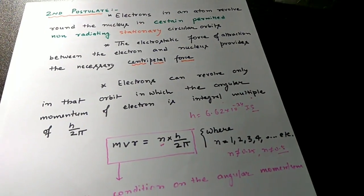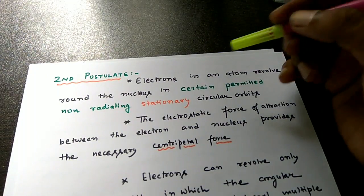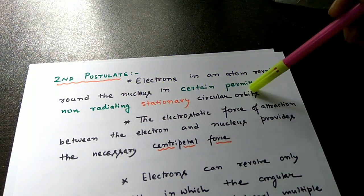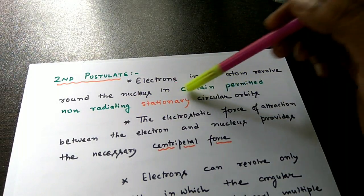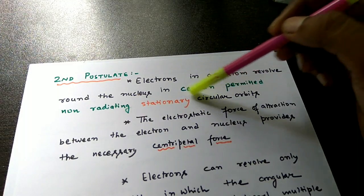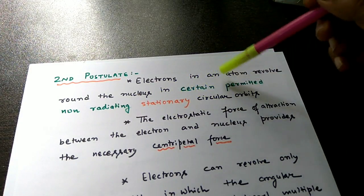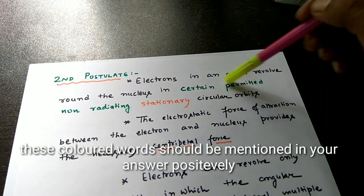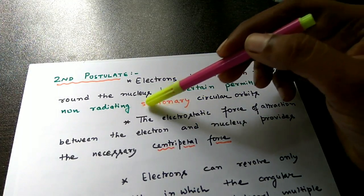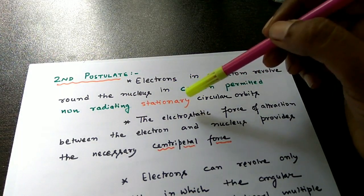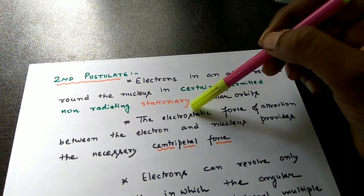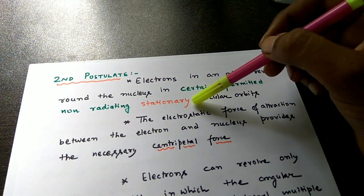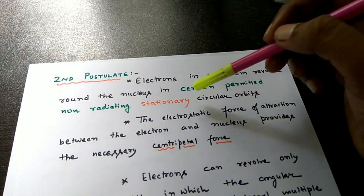Now the second postulate: electrons in an atom revolve around the nucleus in certain permitted, non-radiating, stationary circular orbits. The words 'stationary' and 'non-radiating' must be remembered by students because they have very important meaning. Stationary means the orbit has a fixed energy level, in which the electron will not lose energy — the electron will have a fixed energy while revolving in that orbit.